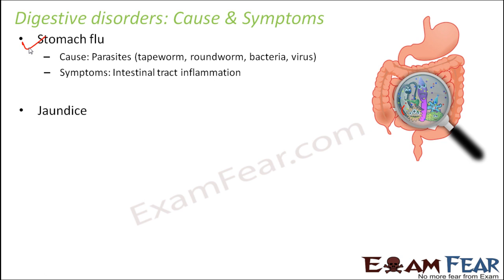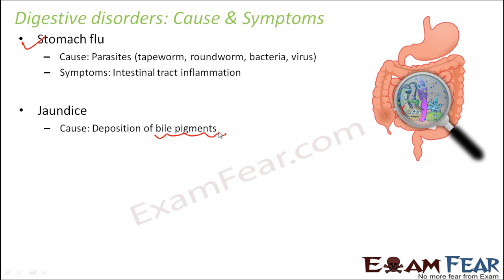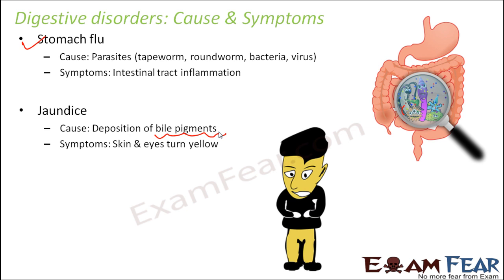Jaundice is a very common disease caused by the deposition of bile pigments. The liver continuously produces bile pigments, but sometimes they are not used up in the process of digestion, leading to their accumulation. The key symptom is that the skin and the eyes turn yellow, due to bile pigments called bilirubin or biliverdin. People suffering from jaundice are repeatedly asked to undergo blood tests to check the level of bile pigments, and as the level decreases, the jaundice tends to become normal.